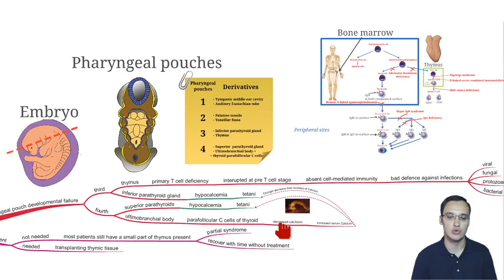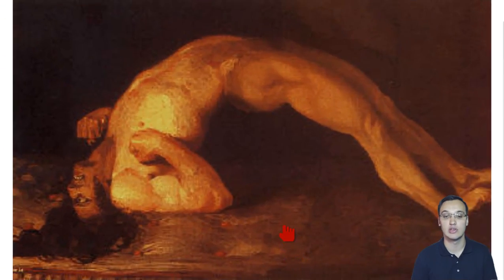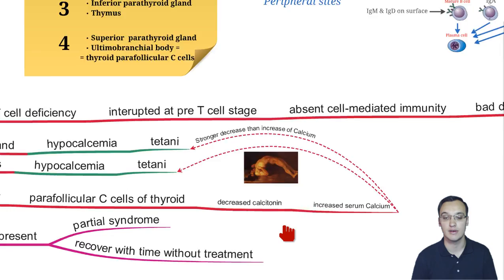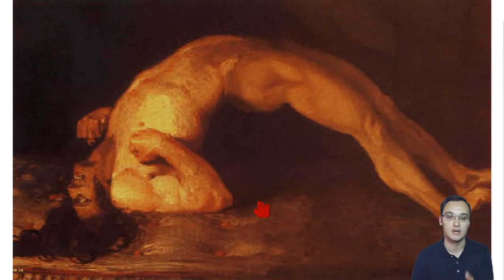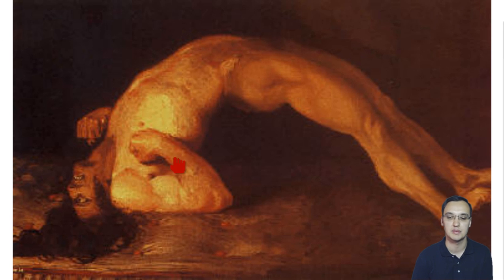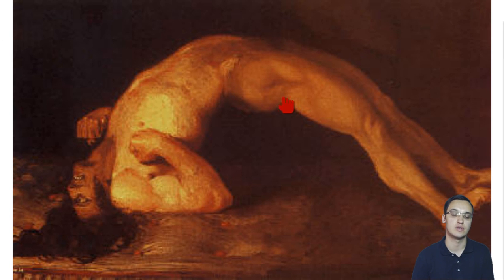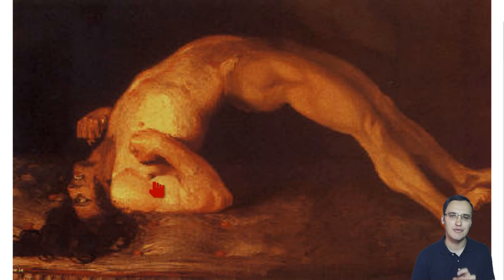This is how tetany looks like. You see here we have a contraction of all the muscles — the biceps, all the extensor muscles, the back muscles of the body, the face — everything is contracting.